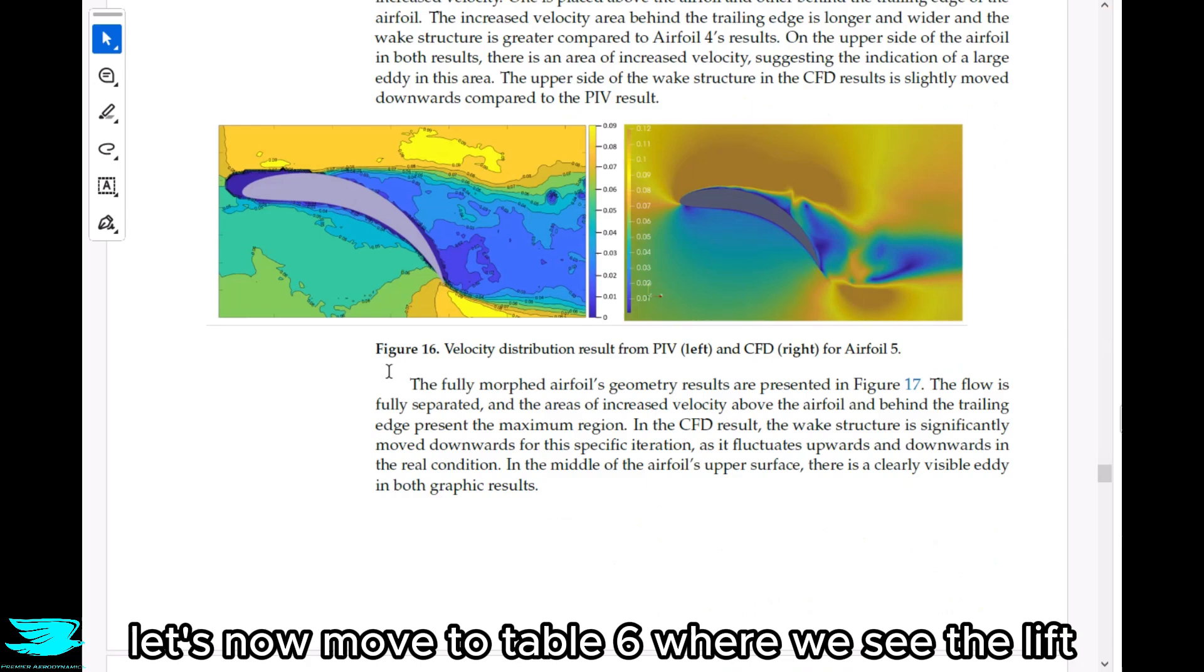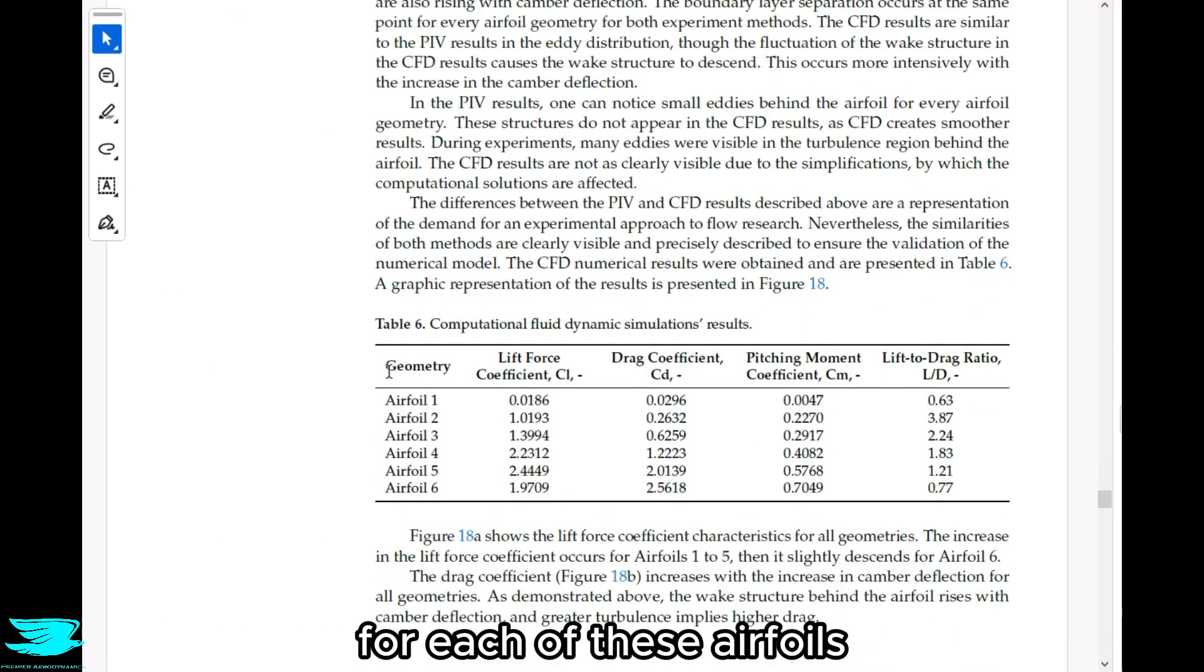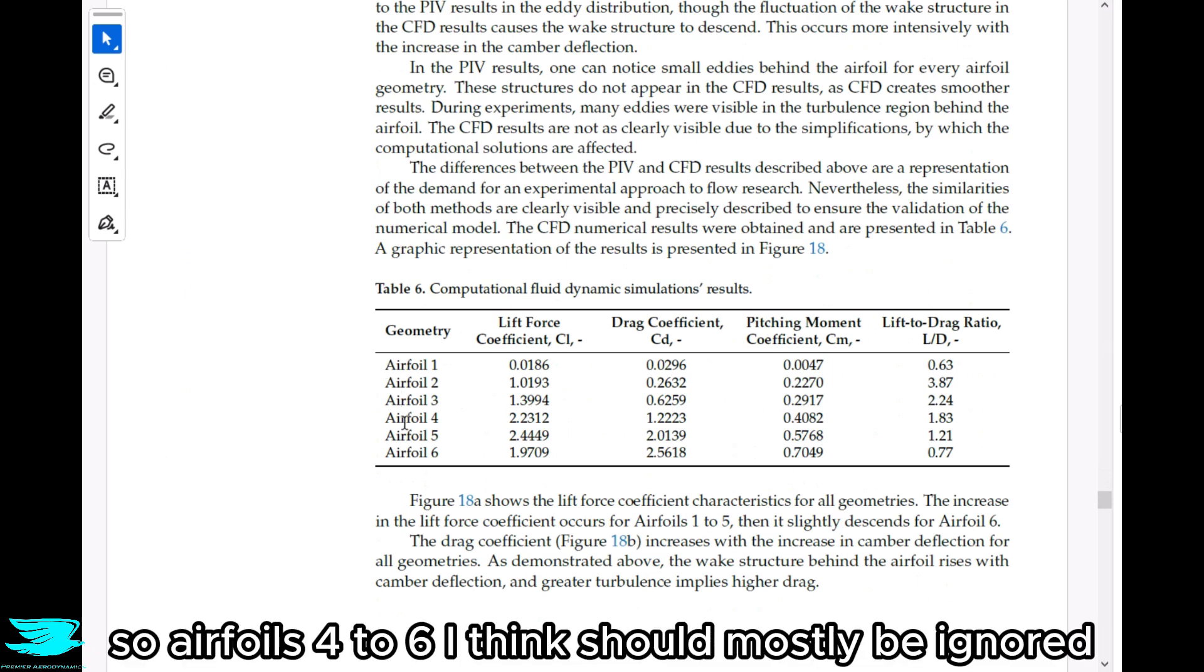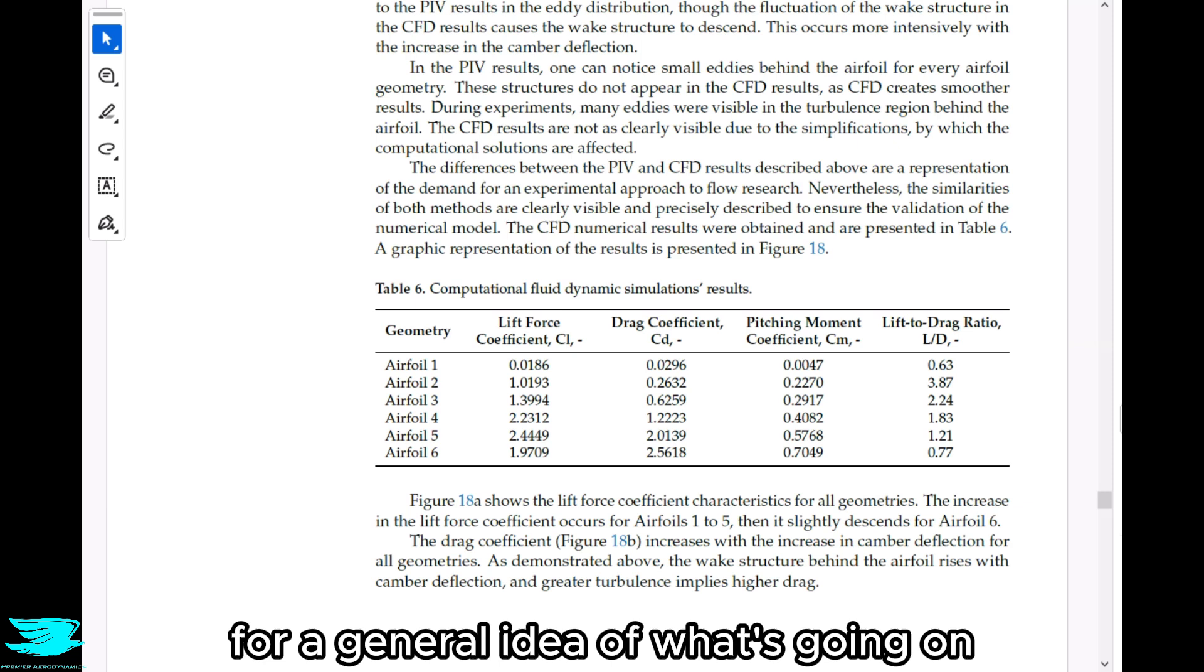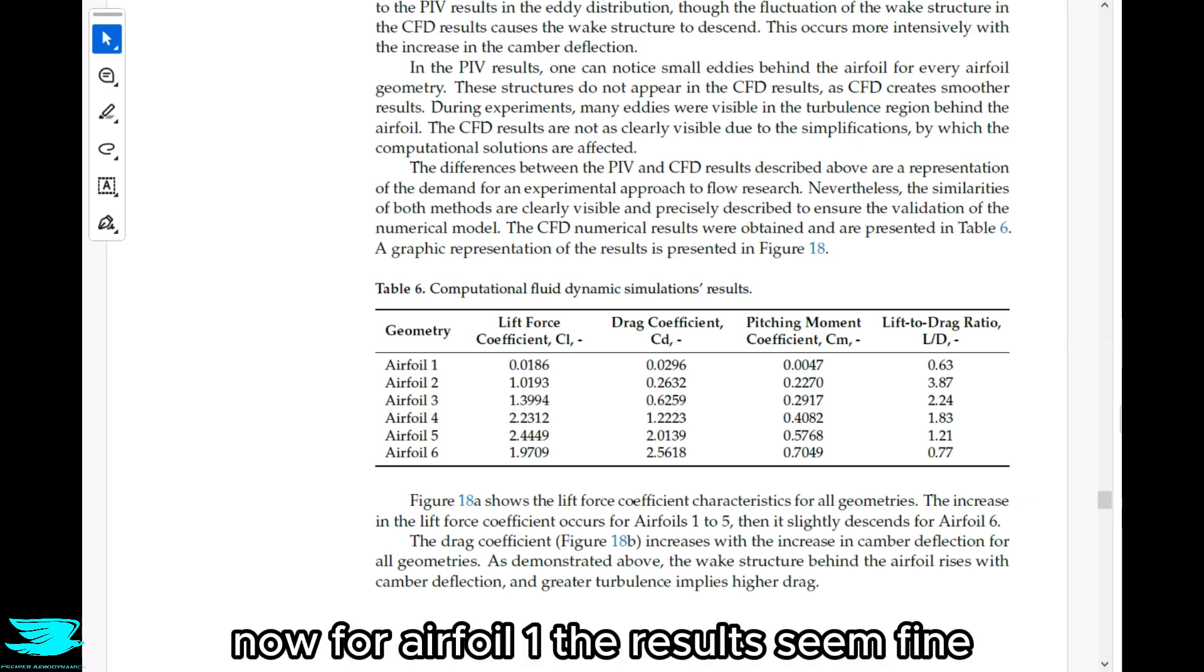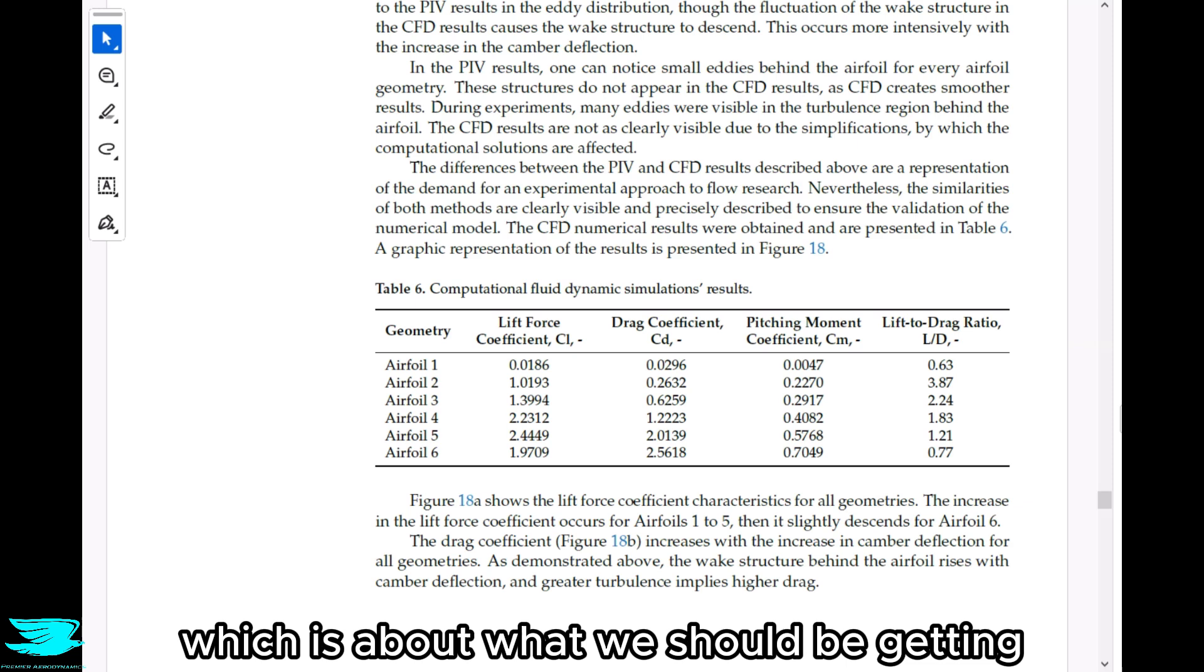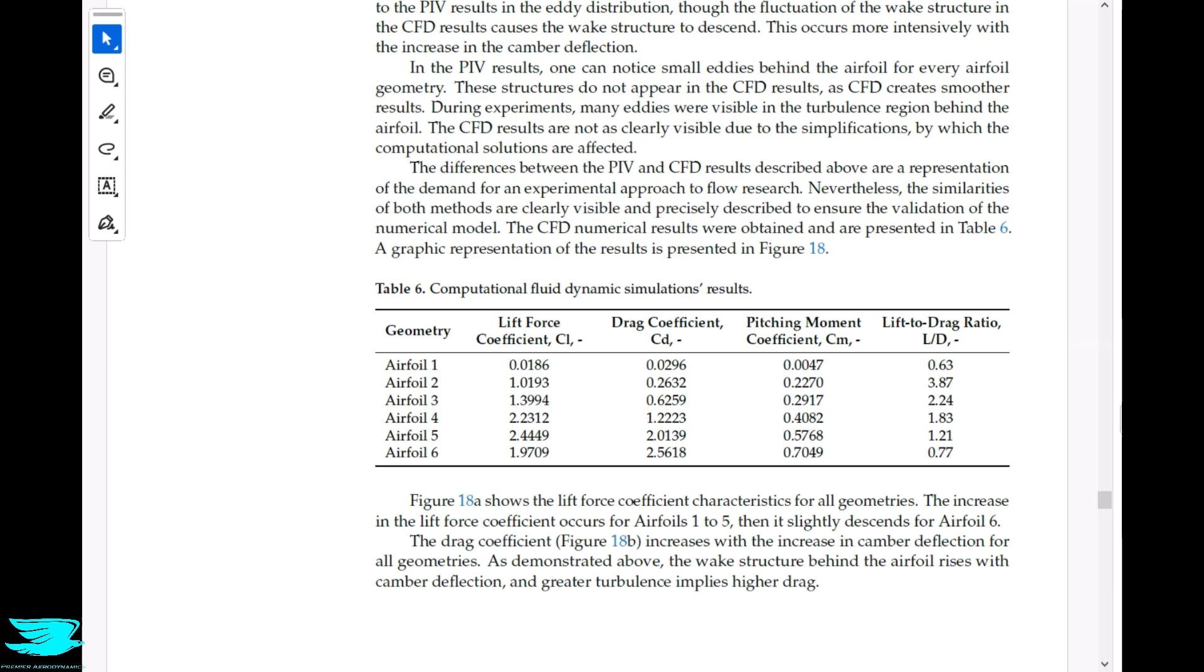Let's now move to table 6, where we see the lift, drag, and pitching moment coefficients for each of these airfoils. Note that these numbers are for the CFD. So airfoils 4 to 6, I think, should mostly be ignored. Airfoils 1 to 3, I think, should still be okay for a general idea of what's going on. Now, for airfoil 1, the results seem fine. We get almost no lift, which is about what we should be getting. The drag coefficient is about what it should be too.